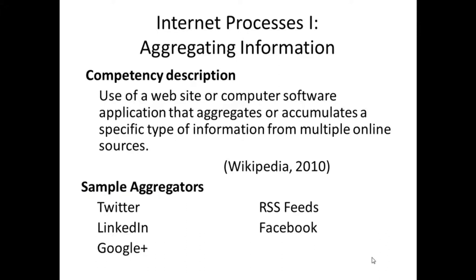An aggregating information competency description can be viewed as the use of a website or computer software application that aggregates or accumulates a specific type of information from multiple online sources, taken from Aggregation, Wikipedia 2010. Sample aggregators that you could take a look at include Twitter, RSS feeds, LinkedIn, Facebook, and Google Plus.